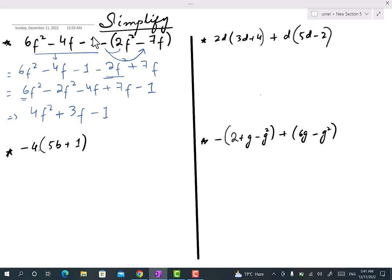Now moving on to the next question. The only operation that we are able to apply is to multiply this term with both of the terms, because it is written without any sign between it, meaning 4 is multiplied with 5b and 1. So the answer is 4 times 5 is 20b and minus 4.